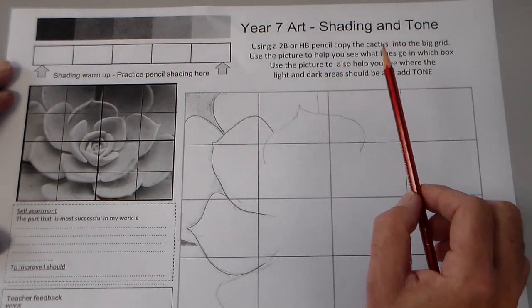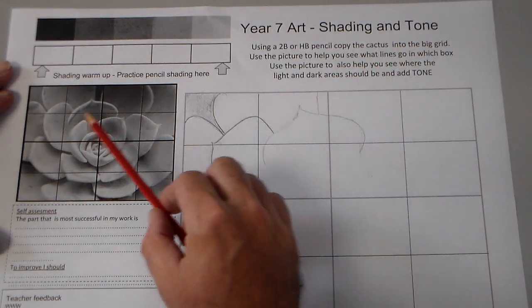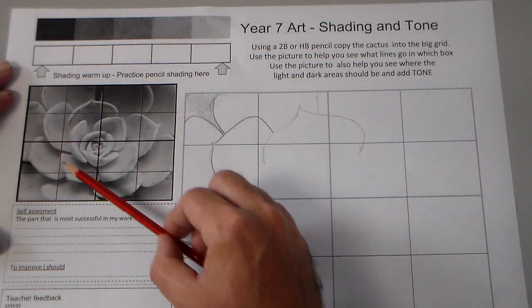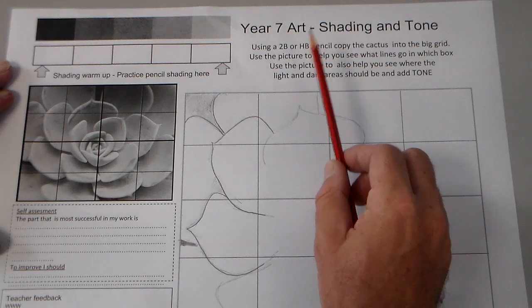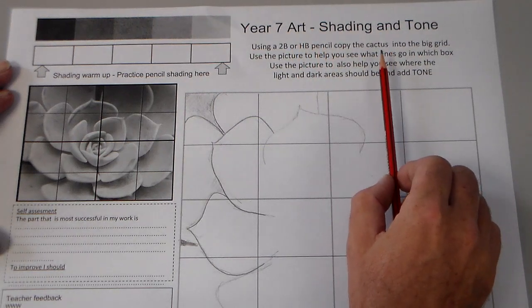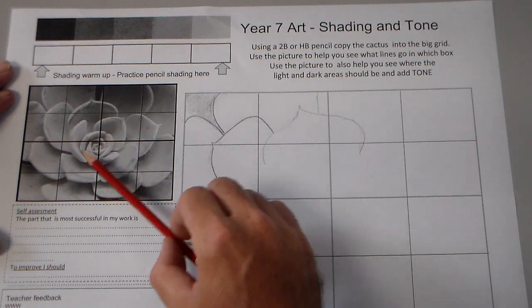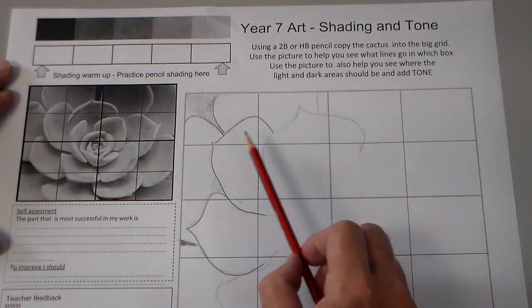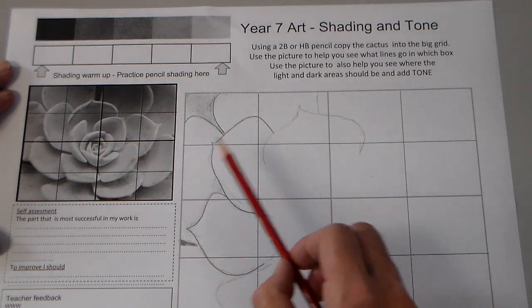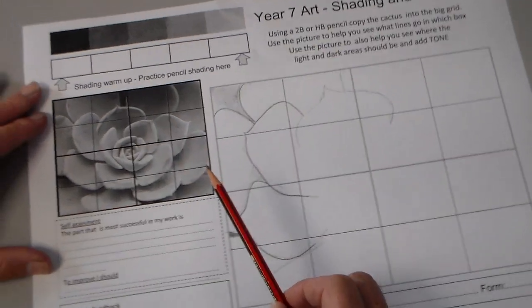Okay, we're going to have a look at this shading and tone exercise. Basically what we've got is a photograph of a cactus plant and it says use a 2B or HB pencil to copy the cactus into the big grid. Use the picture to help you see which lines go into which box and use the picture to see the light and dark areas of tone.